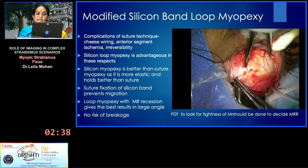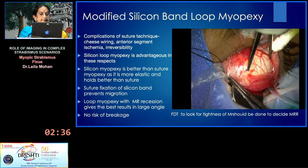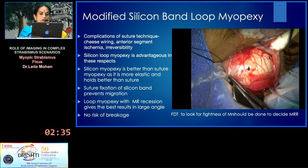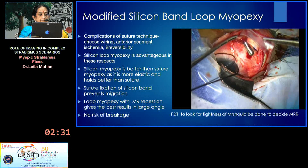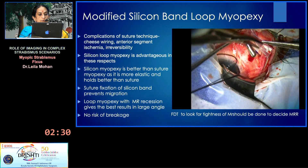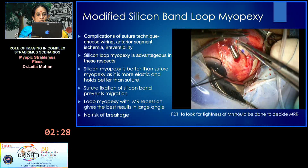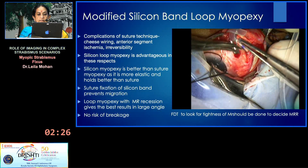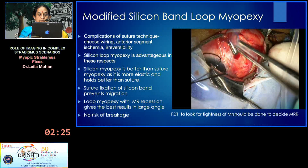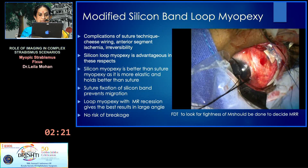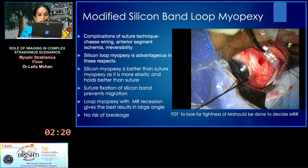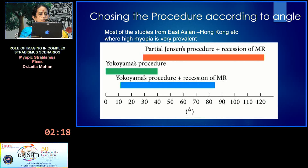With the silicone band, you can either take it through a tunnel in the sclera or fix it to the sclera after suturing. The muscle must be fixed well backward — eight to ten millimeters behind the insertion. The procedure is chosen according to the angle of deviation.